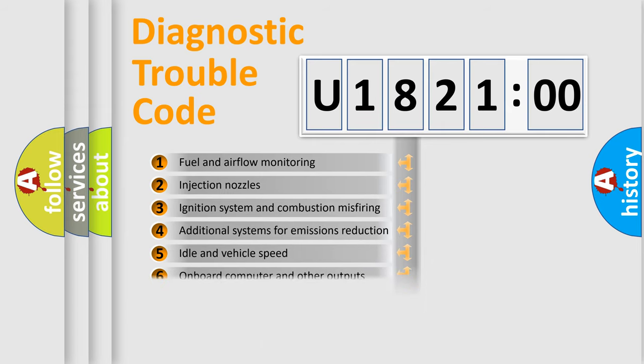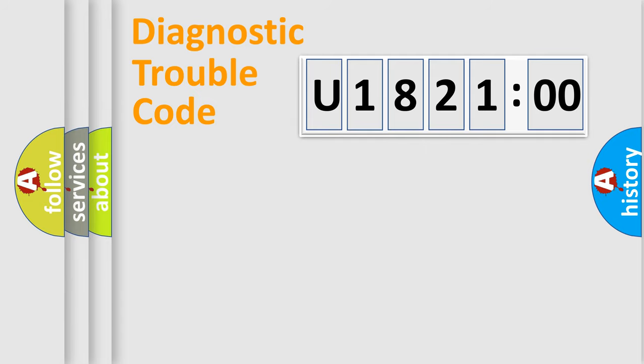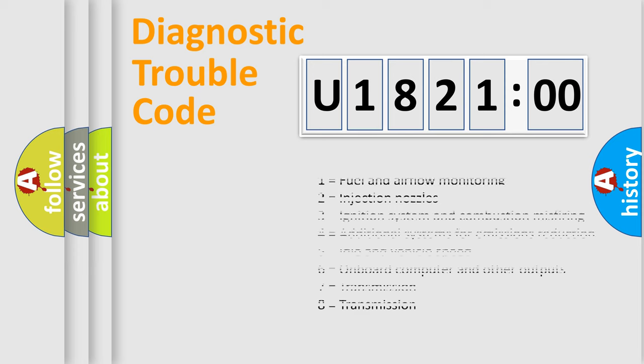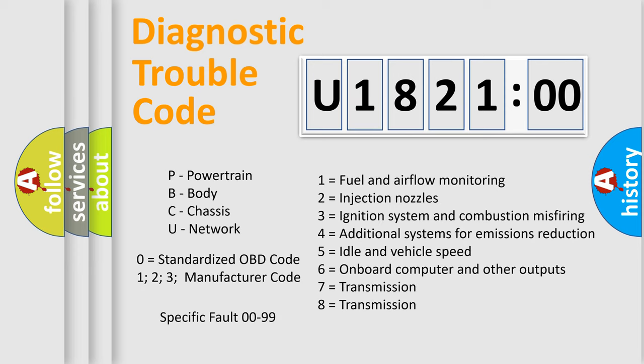The distribution shown is valid only for the standardized DTC code. Only the last two characters define the specific fault of the group. The add-on to the error code serves to specify the status in more detail, for example, a short to the ground. Let's not forget that such a division is valid only if the second character code is expressed by the number zero.